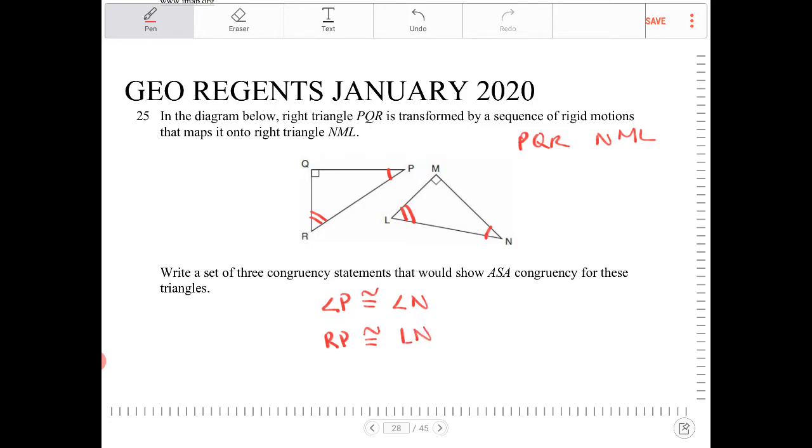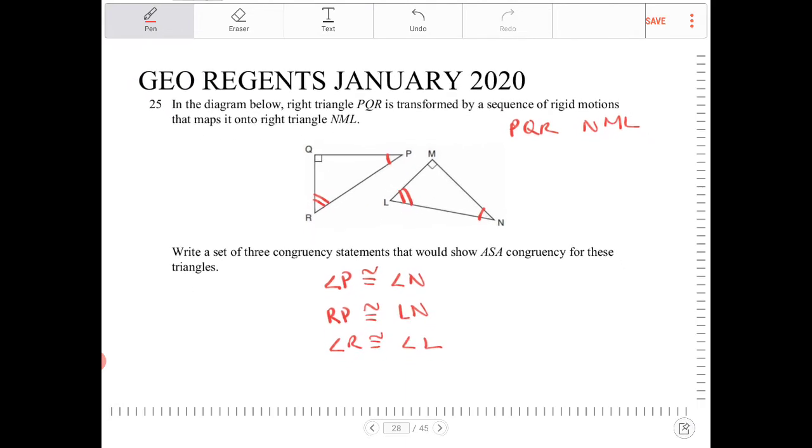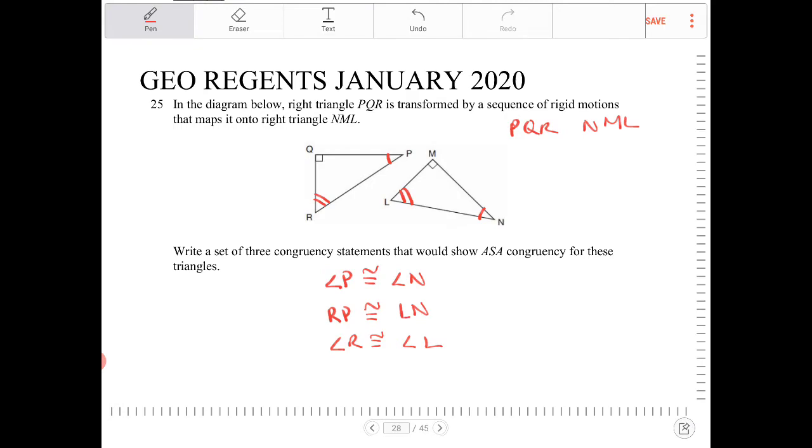And I also know that angle R is congruent to angle L. So this would be angle side angle. That's all they're really looking for.